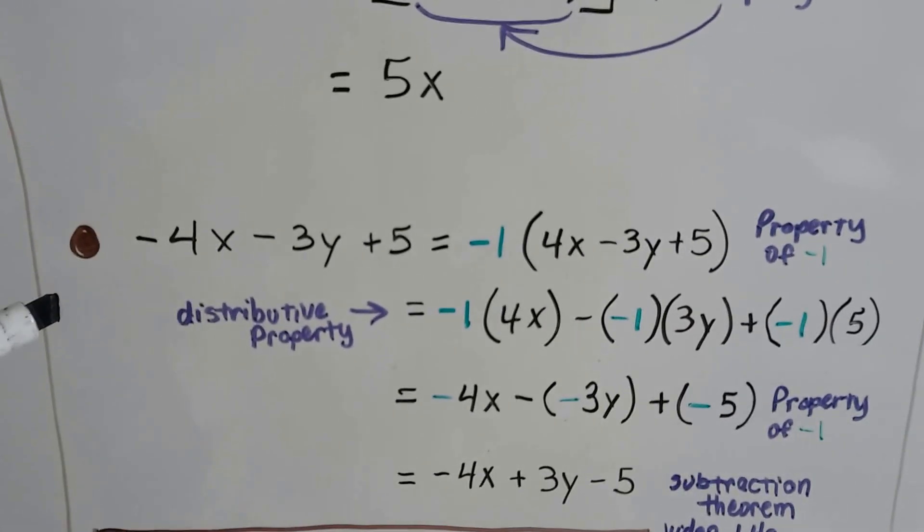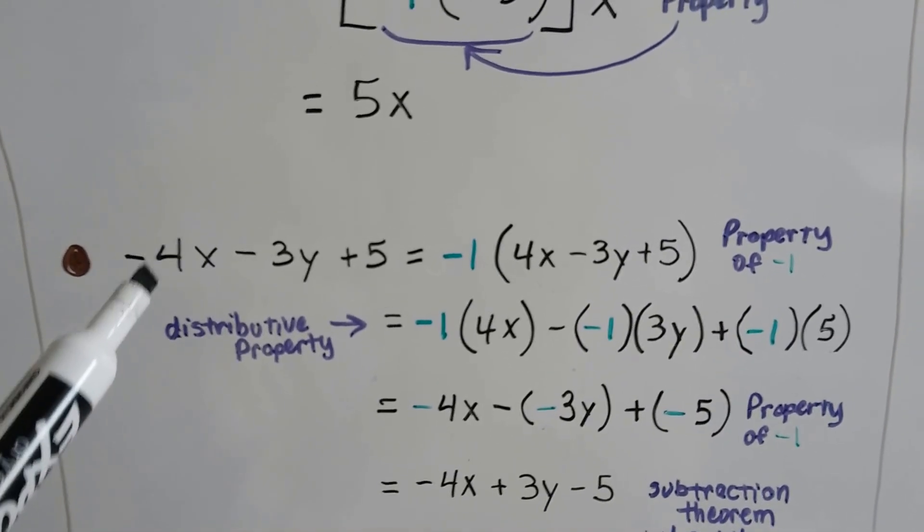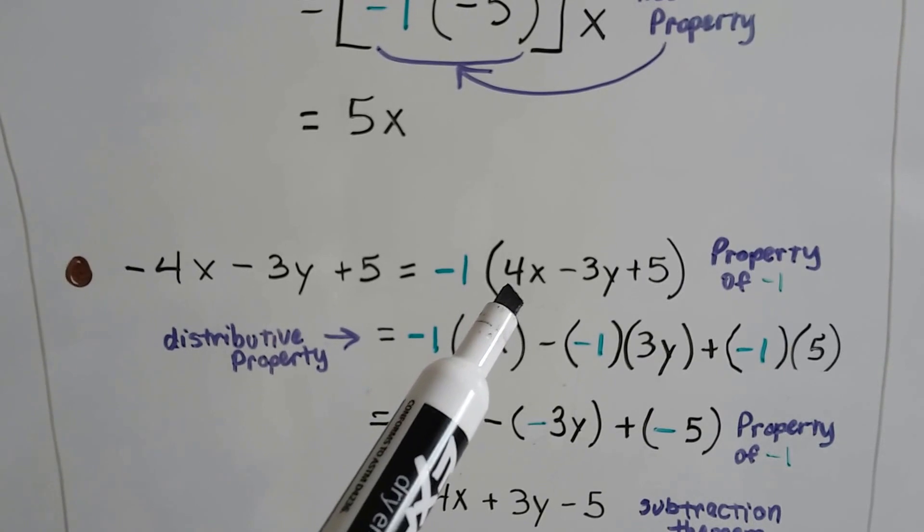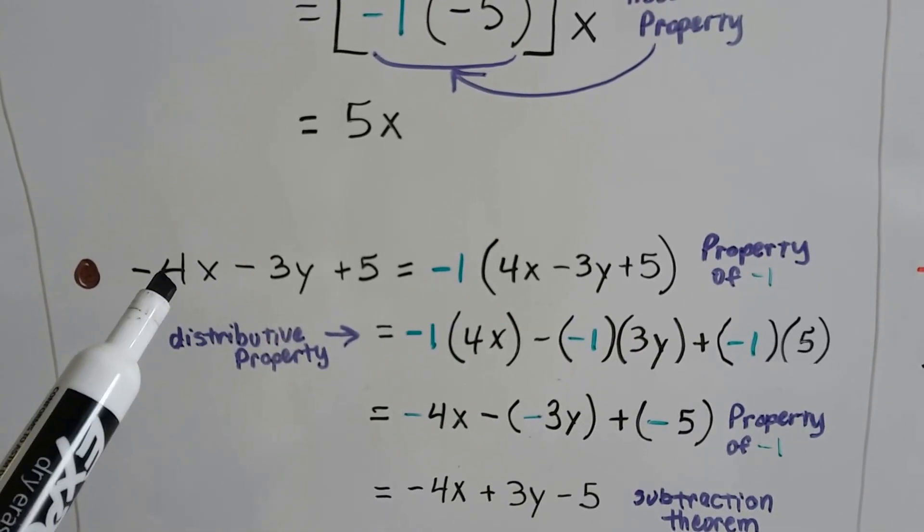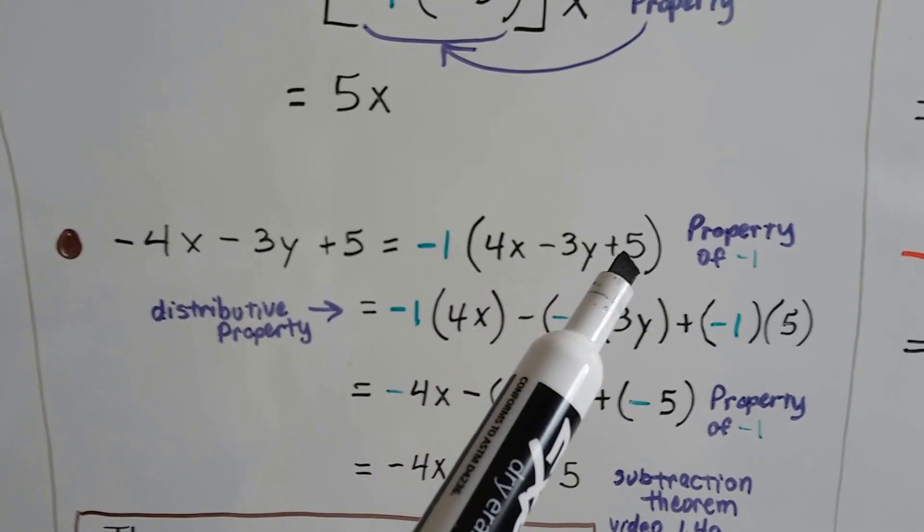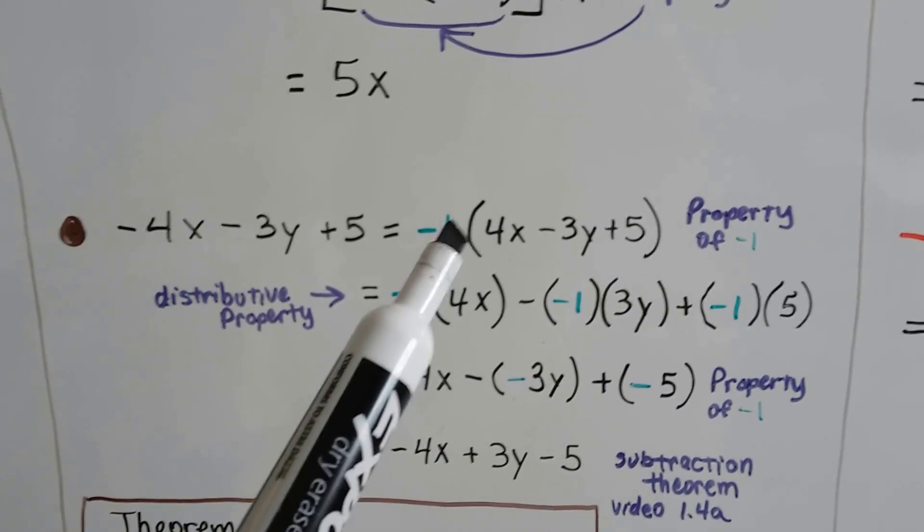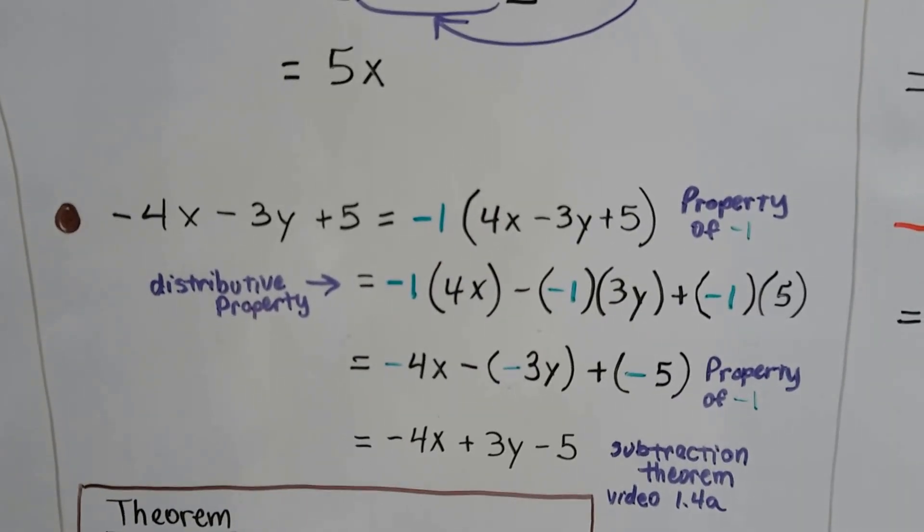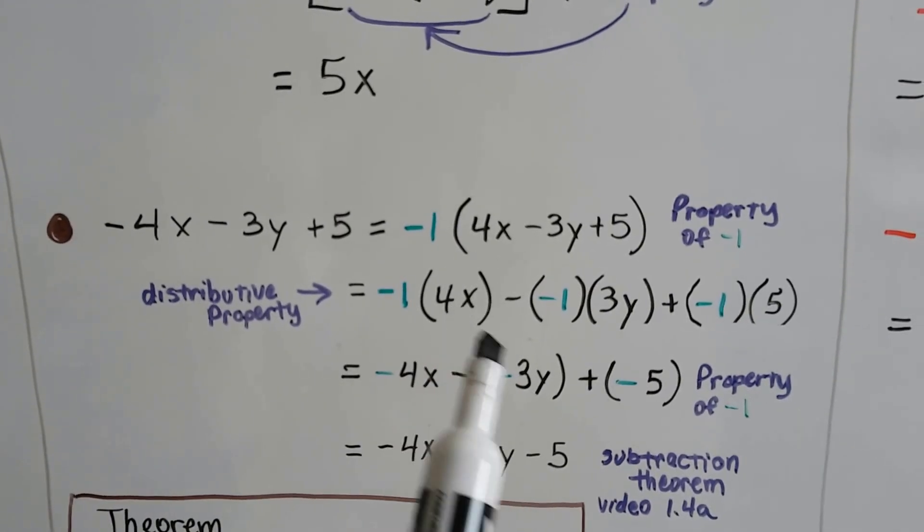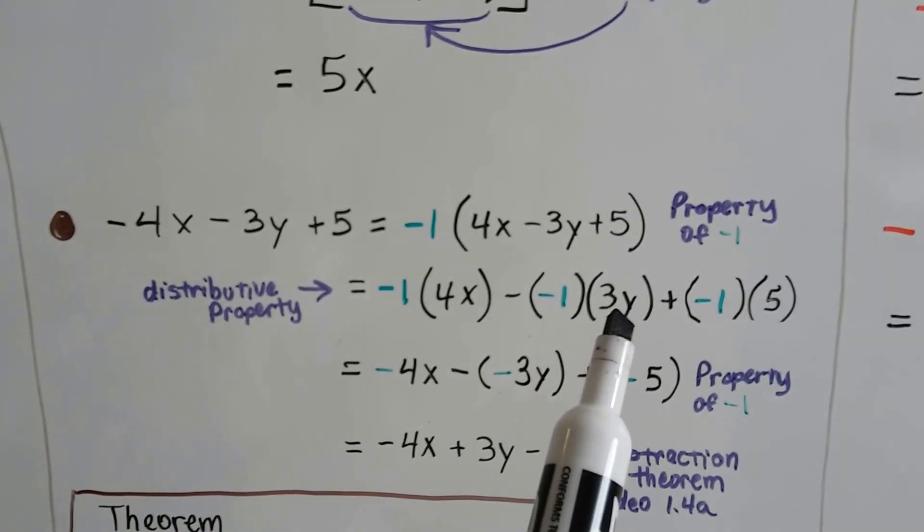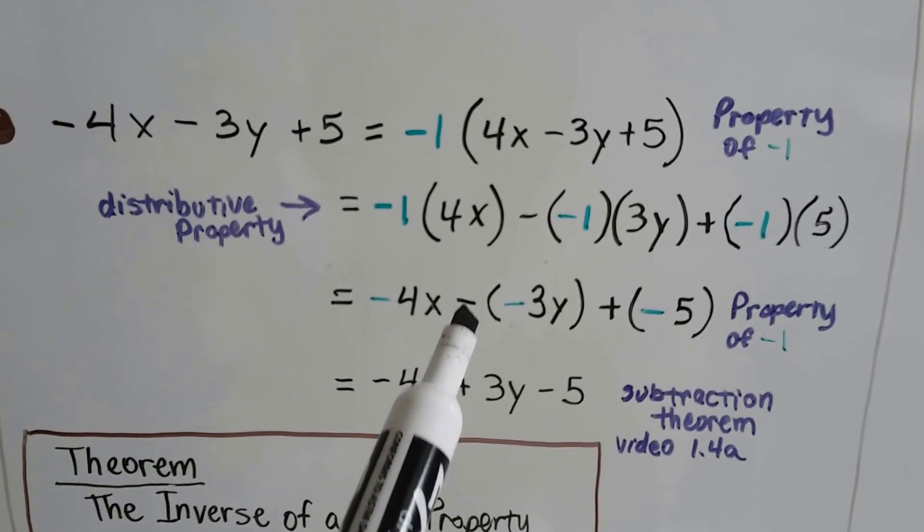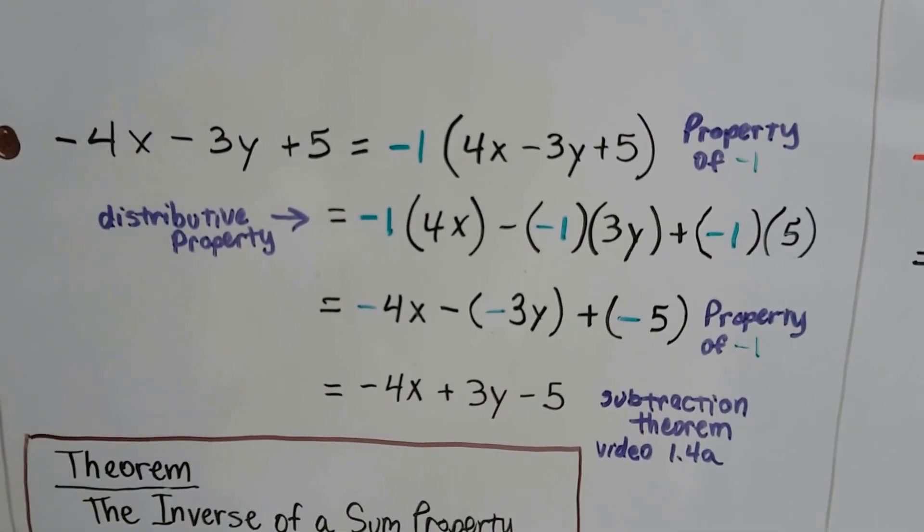When we have negative 4x minus 3y plus 5, imagine that there's that little negative 1 there, because negative 1 times 4 is negative 4 anyway. So if we put these in parentheses and separate the negative from the 4 here as negative 1, that's using the property of negative 1. Then we have positive 4x minus 3y plus 5, and that negative 1 is on the outside. And we can distribute it to each term. We can distribute this negative 1 to the 4x, to the 3y, and to the 5 as negative 1 times 4x minus negative 1 times 3y plus negative 1 times 5. That's going to give us negative 4x minus a negative 3y plus a negative 5. That's still using the property of negative 1.